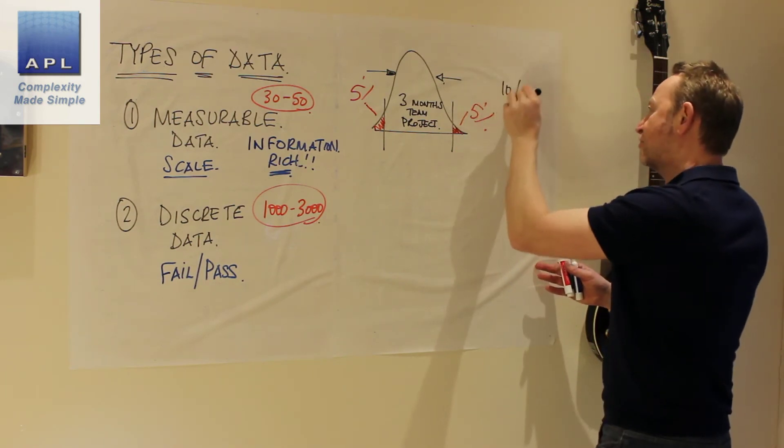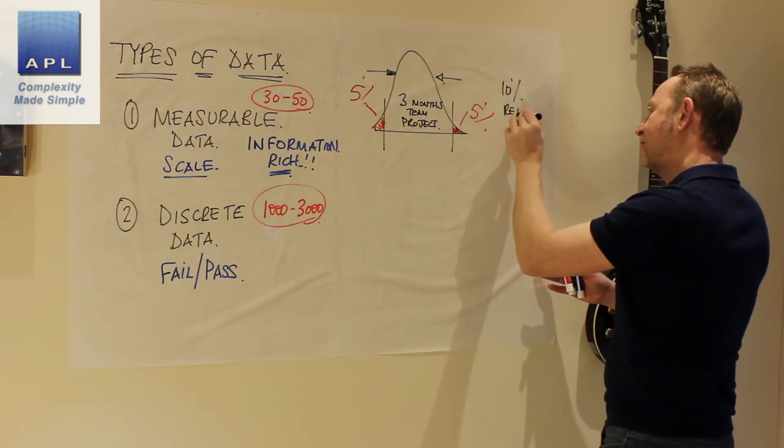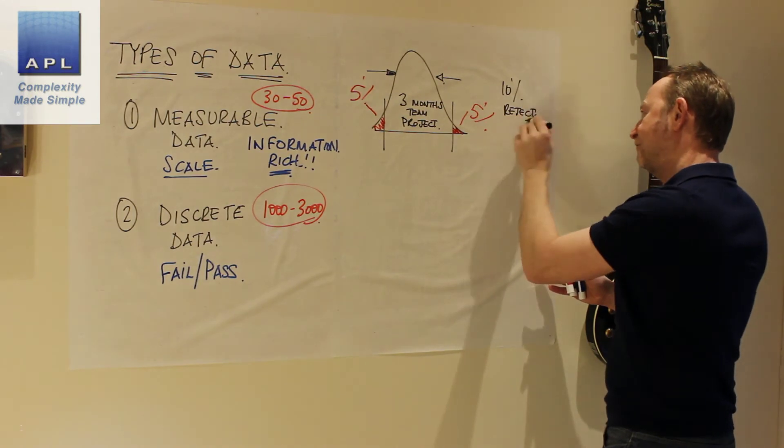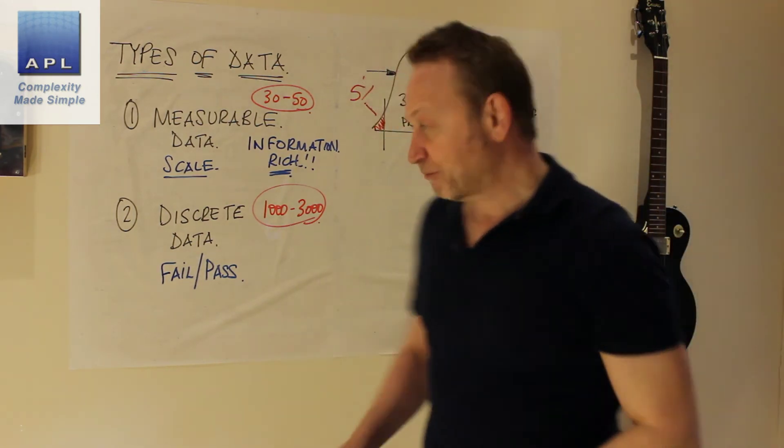Okay, discrete data by the way is just going to say you've just got a 10% reject rate. Okay, so there's picture number one.